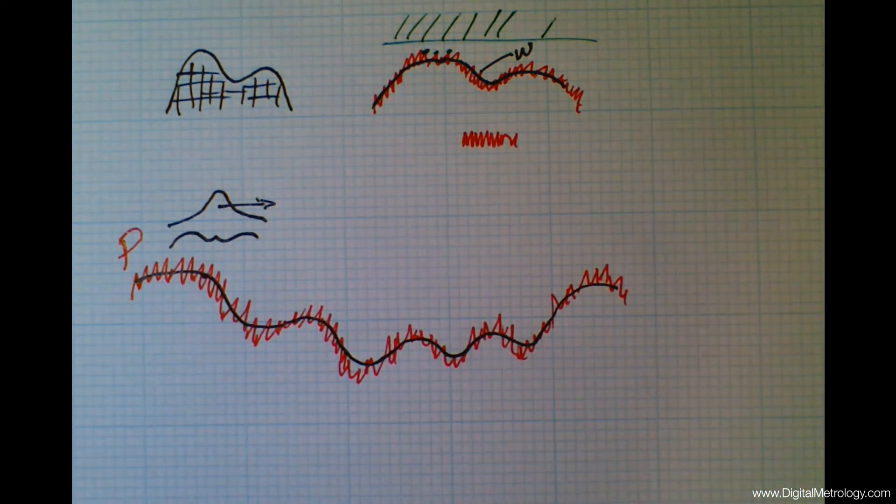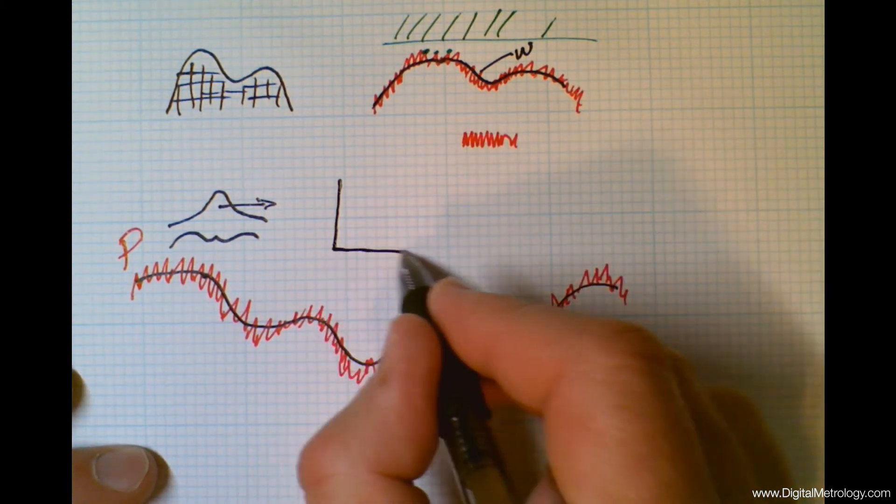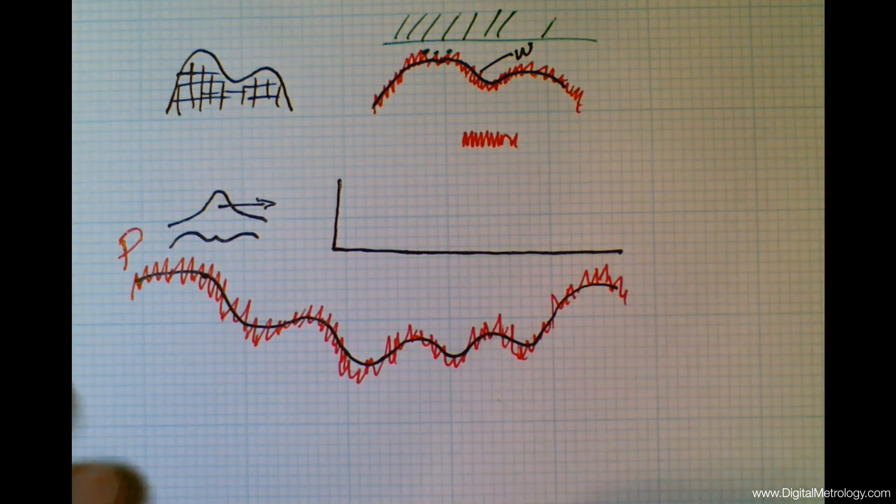This waviness profile can then be removed and looked at by itself. We can look at roughness above and below. But what we've done is we've smoothed our way through the surface with a specific width of a moving average.